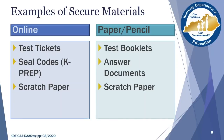If you are dealing with a paper pencil test or the accommodated test kits, you will have test booklets containing the test questions and answer documents to secure. In some cases, the test booklet and answer document are combined into one booklet — think KPREP Science. Scratch paper is available to students in both the online and paper pencil testing formats. Scratch paper is considered a secure material since test questions or answers could be gleaned from these papers. The move to online testing has allowed schools to print the test ticket on a single page so the student may use the rest of the page as scratch paper, reducing the amount of paper which must be secured.